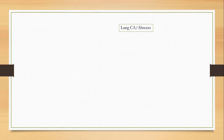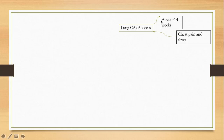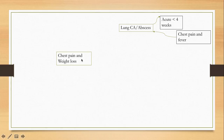Next is lung abscess or lung cancer. Patients with chest pain and fever should be considered for lung abscess — this is usually shorter duration, less than four weeks. If patients are not getting better with treatment, you may want to suspect they have developed an abscess, which is a very common complication of untreated pneumonia. Patients who have chest pain, weight loss, and cough should definitely make us think about lung cancer.